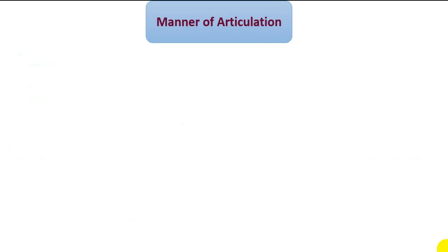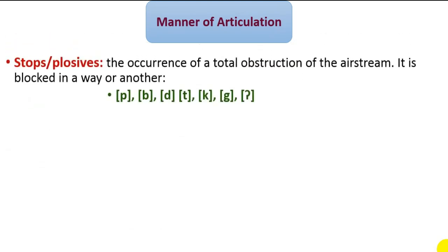Stops or plosives: this feature characterizes consonant sounds, the production of which is made with a total obstruction of the airstream at some point in the vocal tract. Some sounds described as stops or plosives are P, B, T, D, K, G, and the glottal stop.